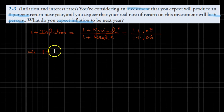So therefore, 1 plus the inflation rate is equal to 1 plus 0.08 is 1.08 and then 1 plus 0.06 is 1.06.